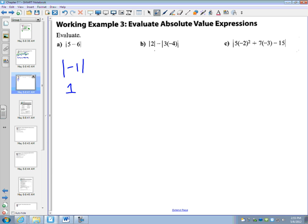Over here, the absolute value of 2 is 2. And then we're going to subtract the absolute value of 3 times negative 4, which is 12. So 2 minus the absolute value of 12 is 12. So 2 minus 12 is negative 10.